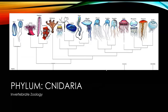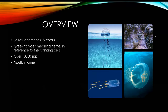Welcome to our lecture about the phylum Cnidaria. Today we're going to be talking about jellies, anemones, and corals, and lots of really interesting cnidarians. Cnidaria comes from the Greek word 'nida' meaning nettle, in reference to their stinging cells. There are over 10,000 plus species in the world that we know of, and of those species they are mostly marine, with some living in freshwater habitats.